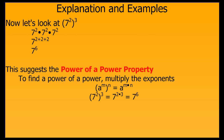This now suggests a second property, known as the power of a power property. It says that to find a power of a power, keep the base the same but multiply the exponents. So you have a to the m, then that whole thing raised to the n power, and your simplified form will be a to the m times n. In our example with seven, seven to the second power, the whole quantity raised to the third power, gives me seven to the two times three power, or seven to the sixth.